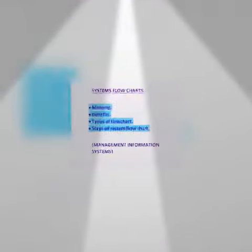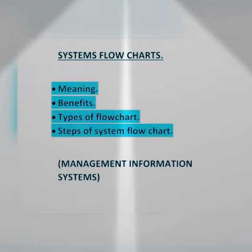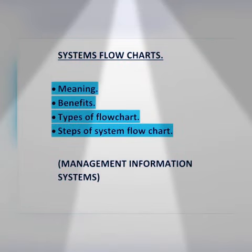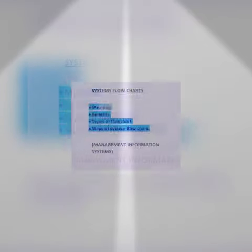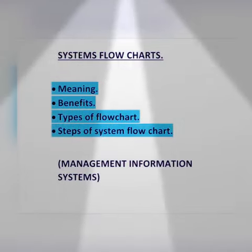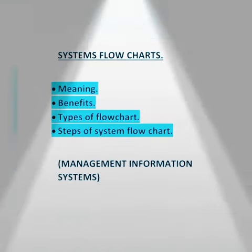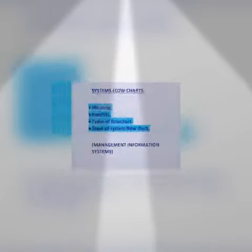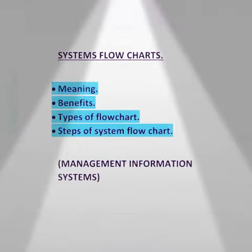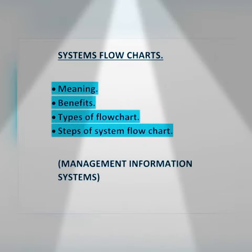System flowcharts are a way of displaying how data flows in a system and how decisions are made to control events. To illustrate this, we can use symbols, which we will see in the next video.